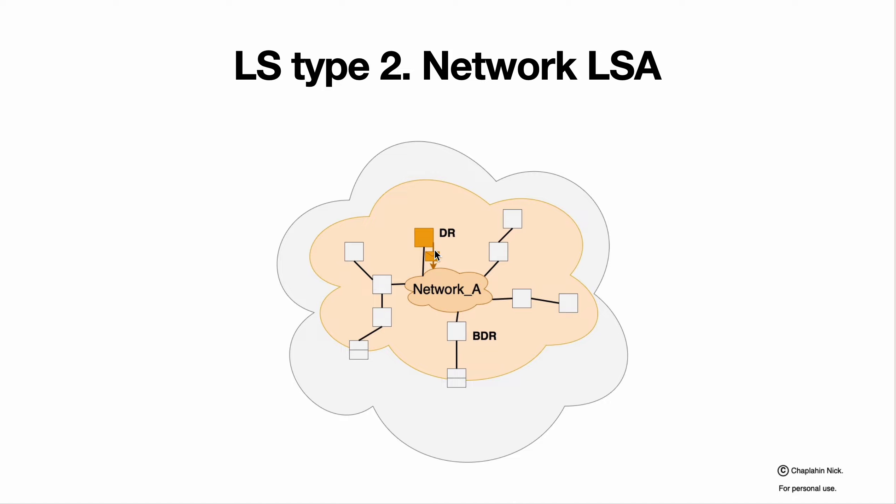Designated router will generate network LSAs, LS Type 2, notifying all the devices in area about all the routers that are connected to this network. This is done to avoid a chaos when each router will notify everybody about it is connected to some network A. This information is going by single packet from single source and avoiding some misunderstanding and reducing control traffic dramatically.